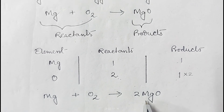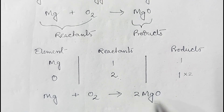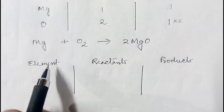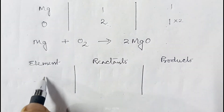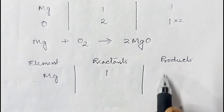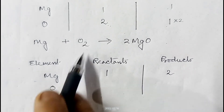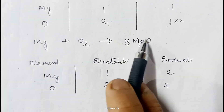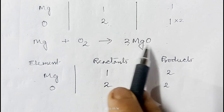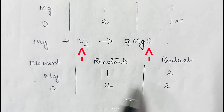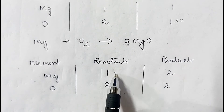Remember, numbers should be written before the formulae of the reactant or product, just like coefficients in an algebraic equation. Now in Mg + O₂ → 2MgO, oxygen is balanced — two on each side — but magnesium is now one on the reactant side and two on the product side, so magnesium is not balanced.